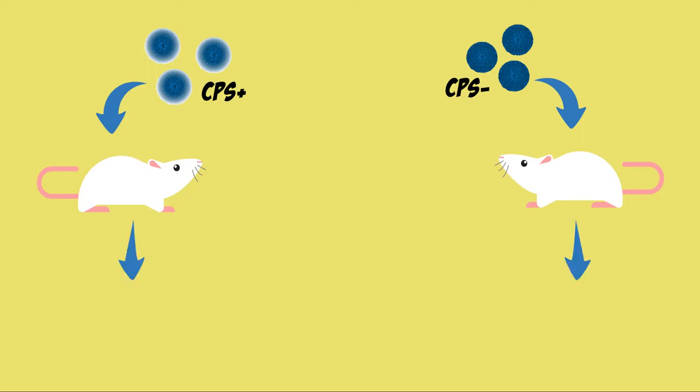So scientists wondered whether the strain without the capsule was causing some of the inflammation that is characteristic of IBD. To test that, the scientists took either type of strains and put it inside mice that had no bacteria at all. After three weeks, they sacrificed the mice and removed the intestines to measure the levels of several inflammatory markers.